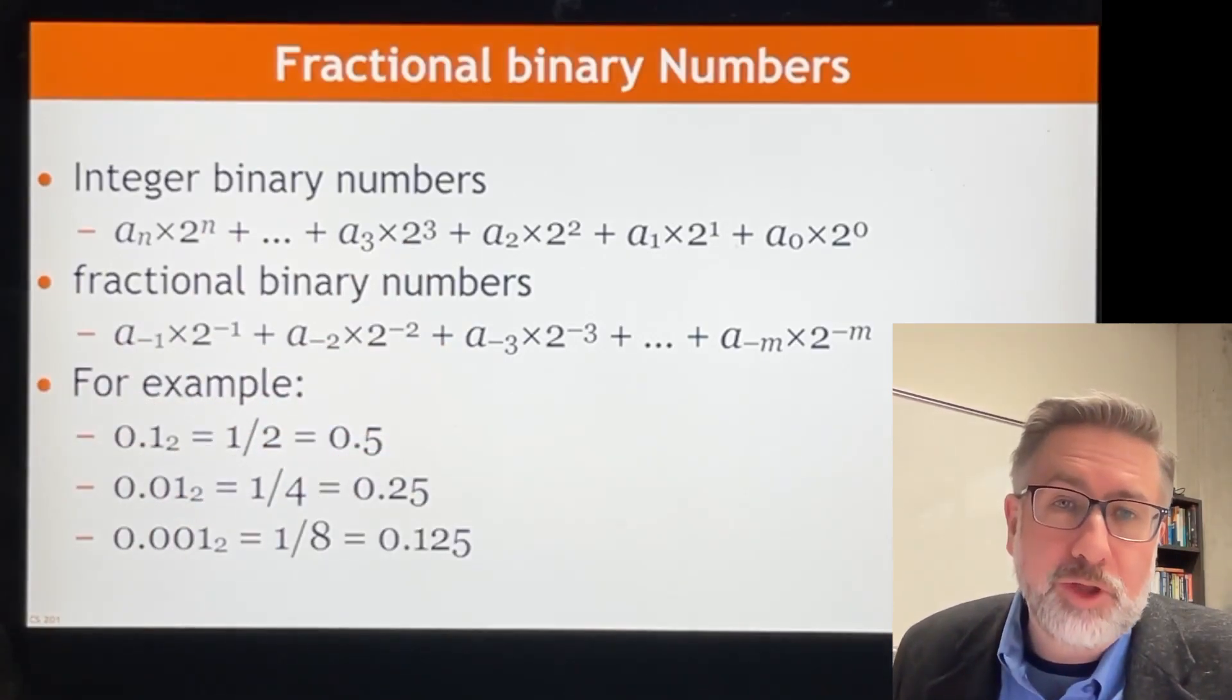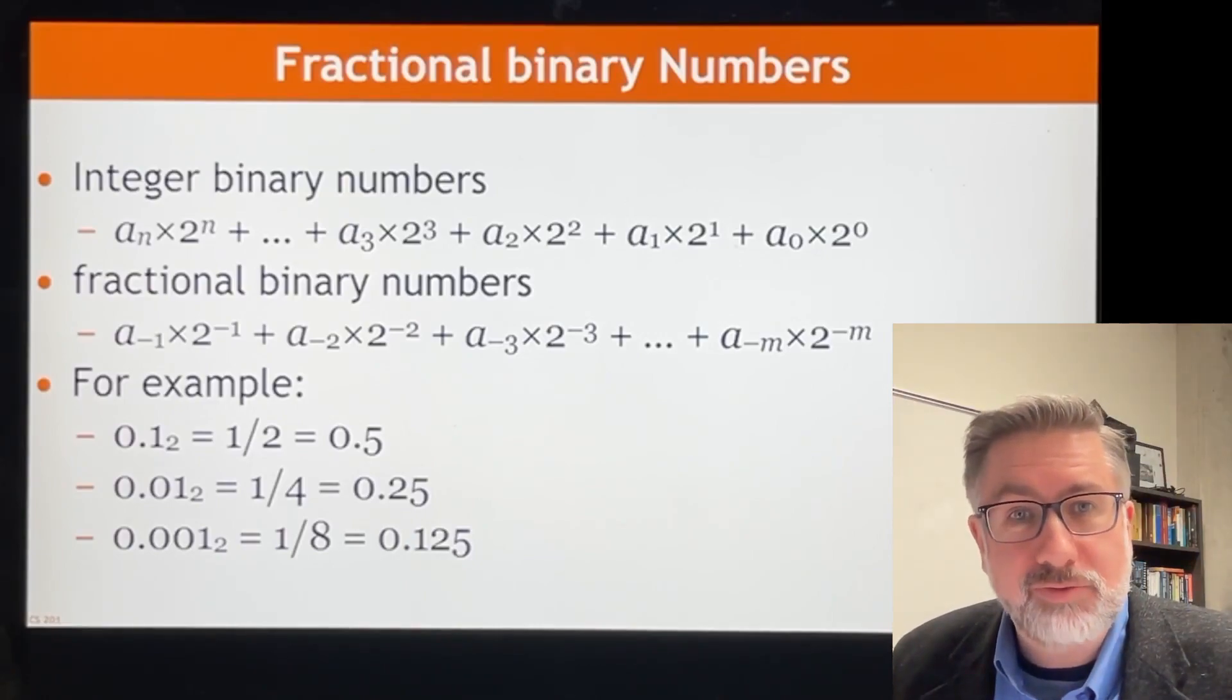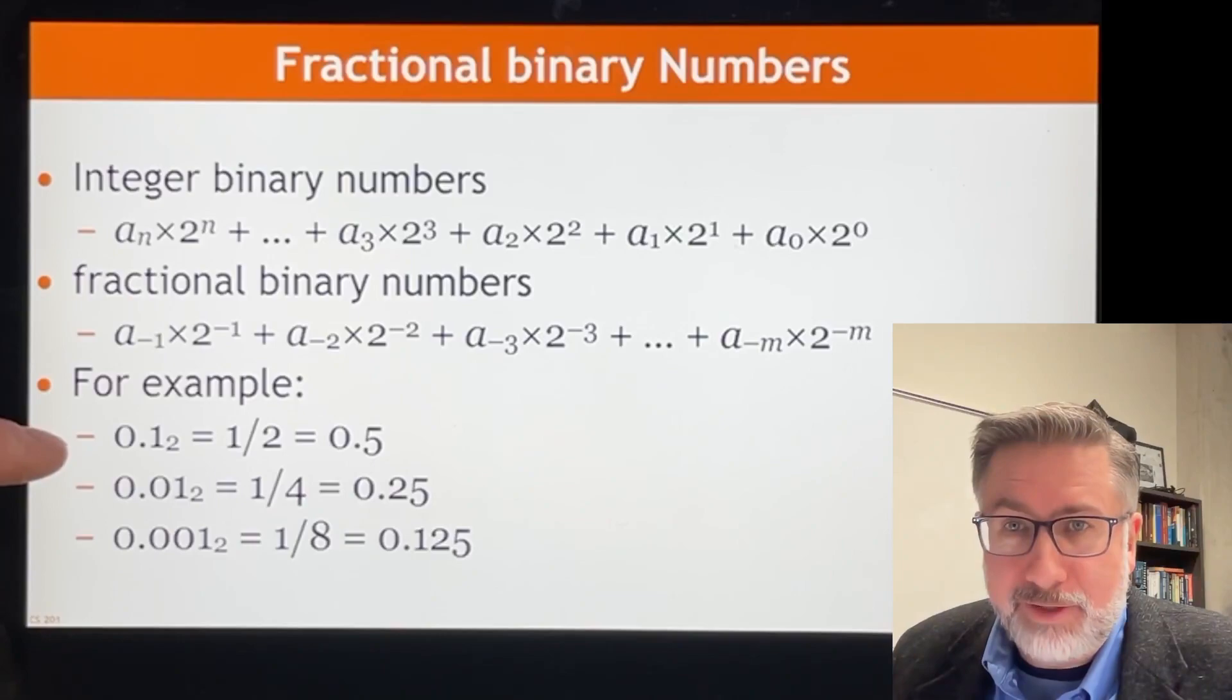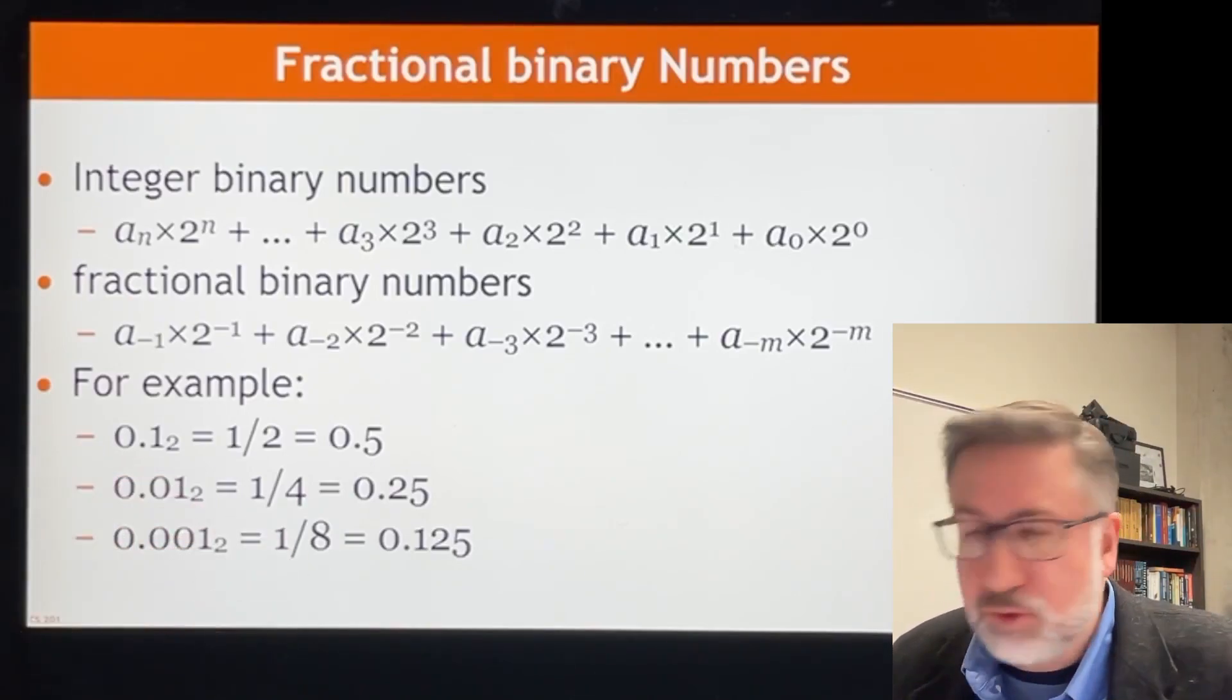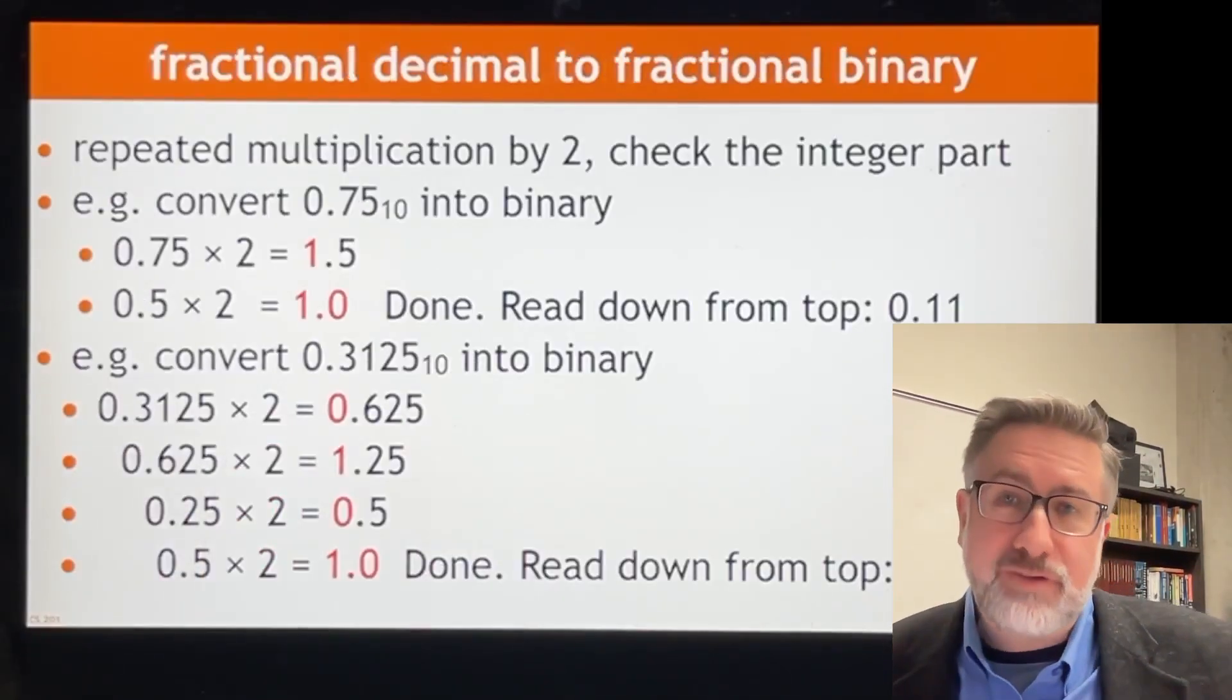So now instead of 2, 4, 8, 16, you have one half, one quarter, one eighth, one sixteenth, all multiplied by one or zero depending on whether or not there is the presence or absence of value in that place location. So 0.1 in binary is a half is 0.5 in decimal, 0.01 in binary is a quarter, and 0.001 is an eighth.